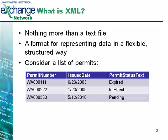Consider a list of permits, for example. We have a simple table with three columns and a list of three permits. Each permit has a permit number, an issue date, and a status.